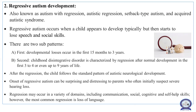The second type is regressive autism development, also known as autism with regression, autistic regression, setback type of autism, or acquired autistic syndrome. In this type, a child appears to develop typically but then starts to lose speech and social skills. There are two subtypes: the first where developmental loss occurs between 15 months and three years of age, and the second where childhood disintegrative disorder is characterized by regression after normal development in the first three to four years, or even up to nine years of life. After the regression, the child follows the standard pattern of autistic neurological development.